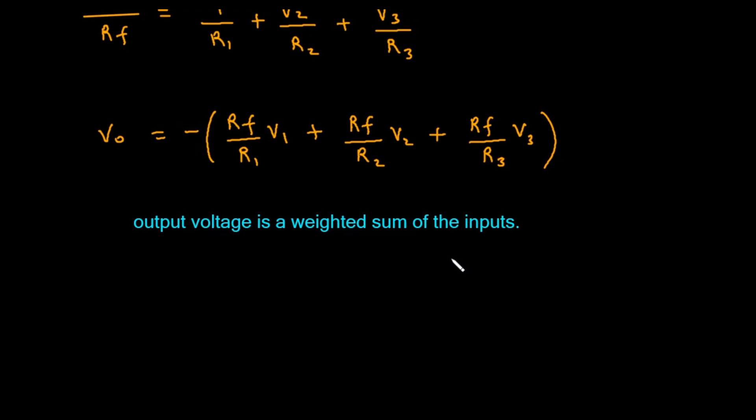If V1 was 1 volt, V2 was 2 volts, and V3 was 1 volt, the sum is 4 volts. The output, Vo, would be negative 4 volts.